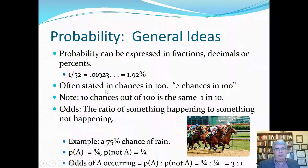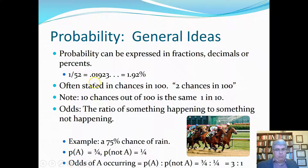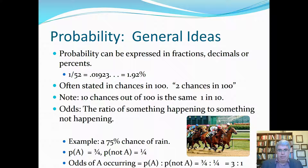Probability can be expressed in fractions, decimals, or percents — they're all the same. For example, the probability of getting an ace of spades out of a deck of cards with one draw is 1 out of 52, which equals 0.01923 as a decimal, or approximately 1.92%. All of those are equivalent ways of expressing the same probability.